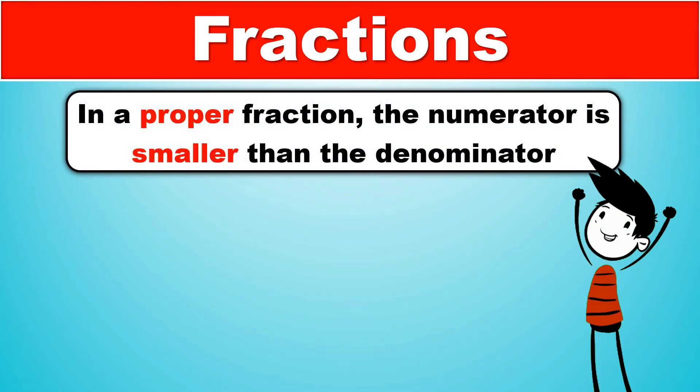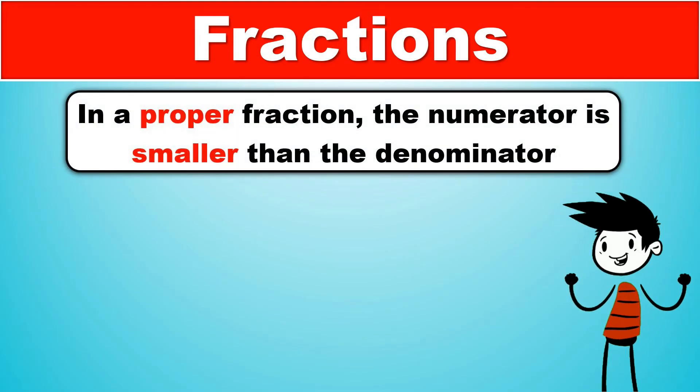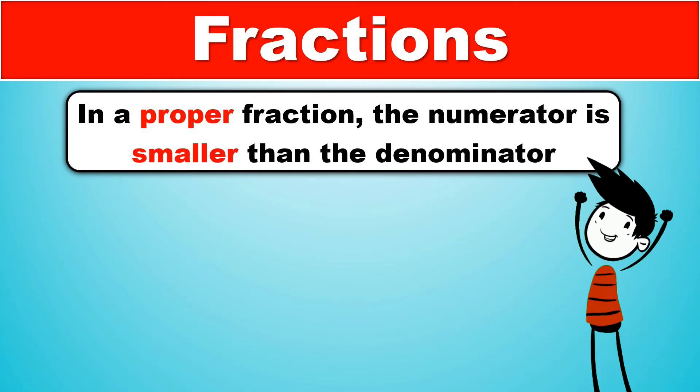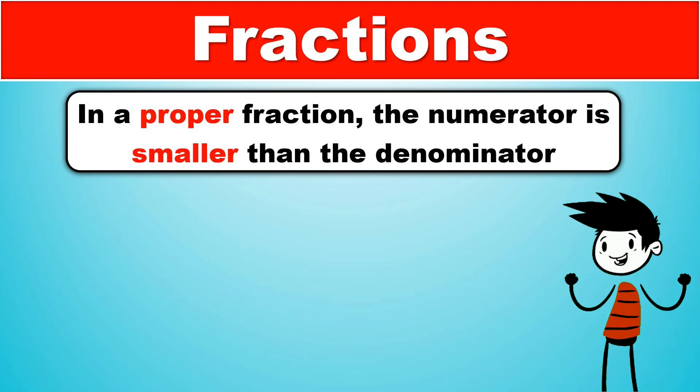In a proper fraction, the numerator, the top number, is smaller than the denominator, the bottom number. Three examples are one half, which is one over two, three quarters, which is three over four, and five eighths, which is five over eight. All of the numerators of these fractions are smaller than the denominators. That's why they are proper fractions.